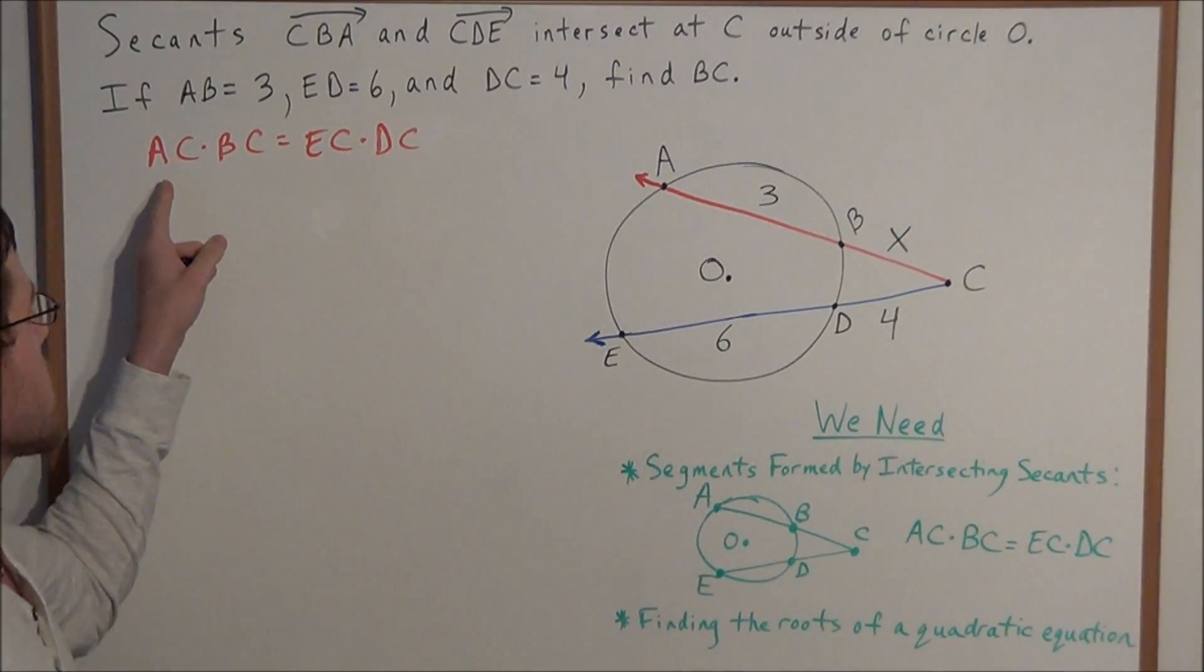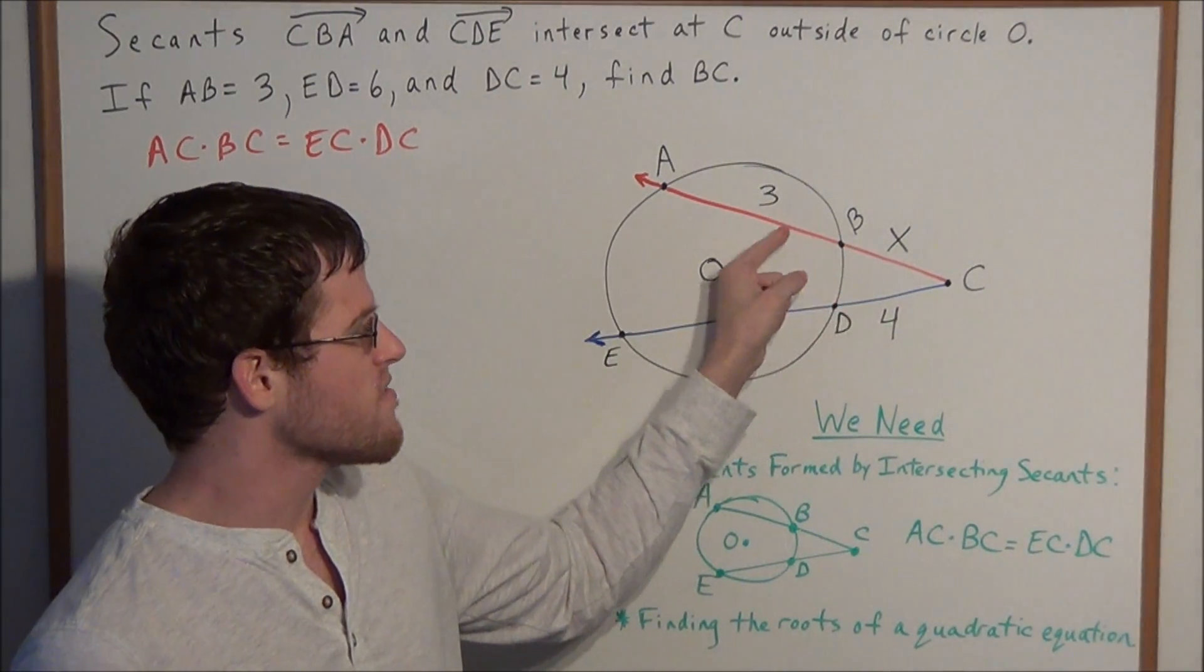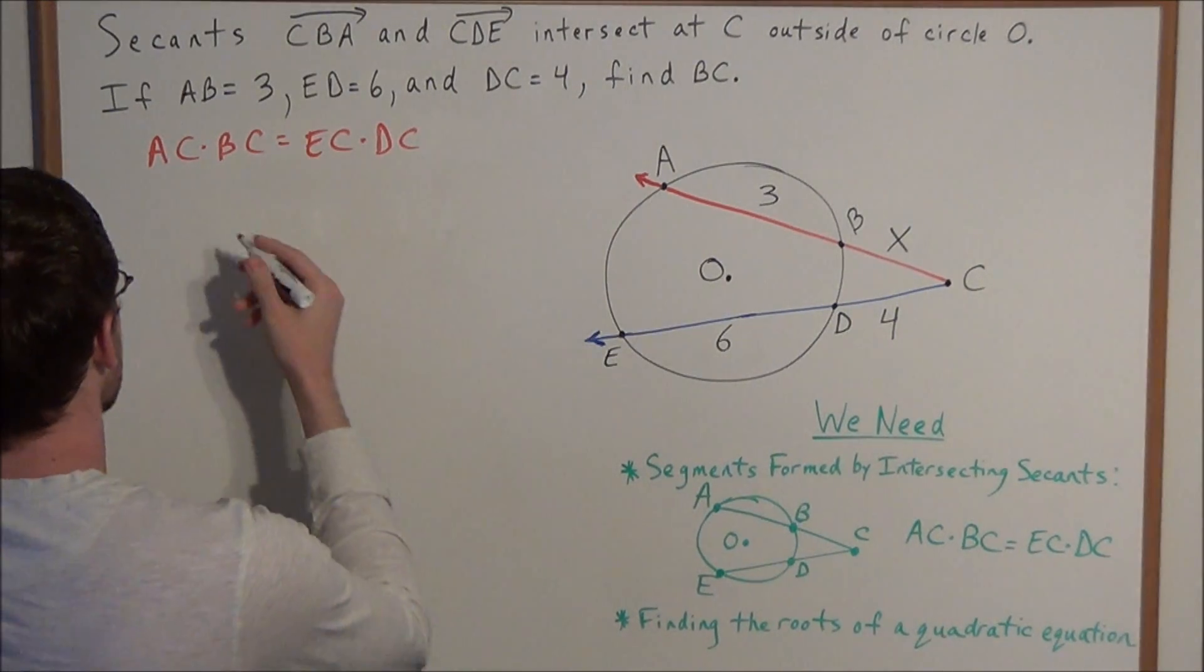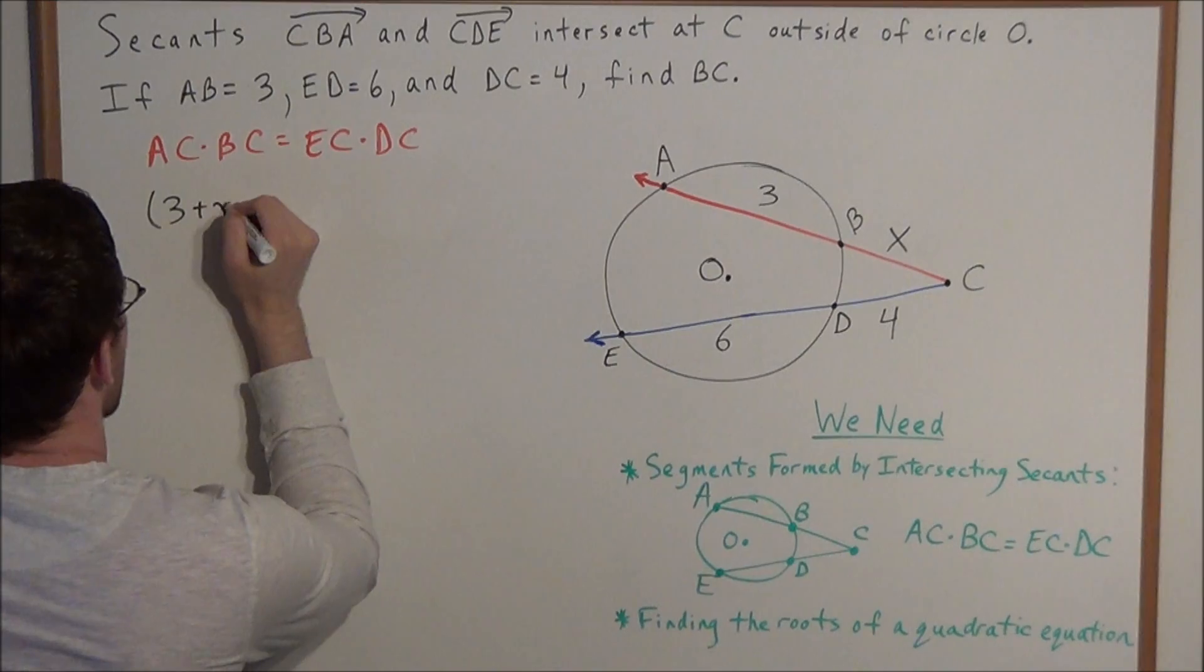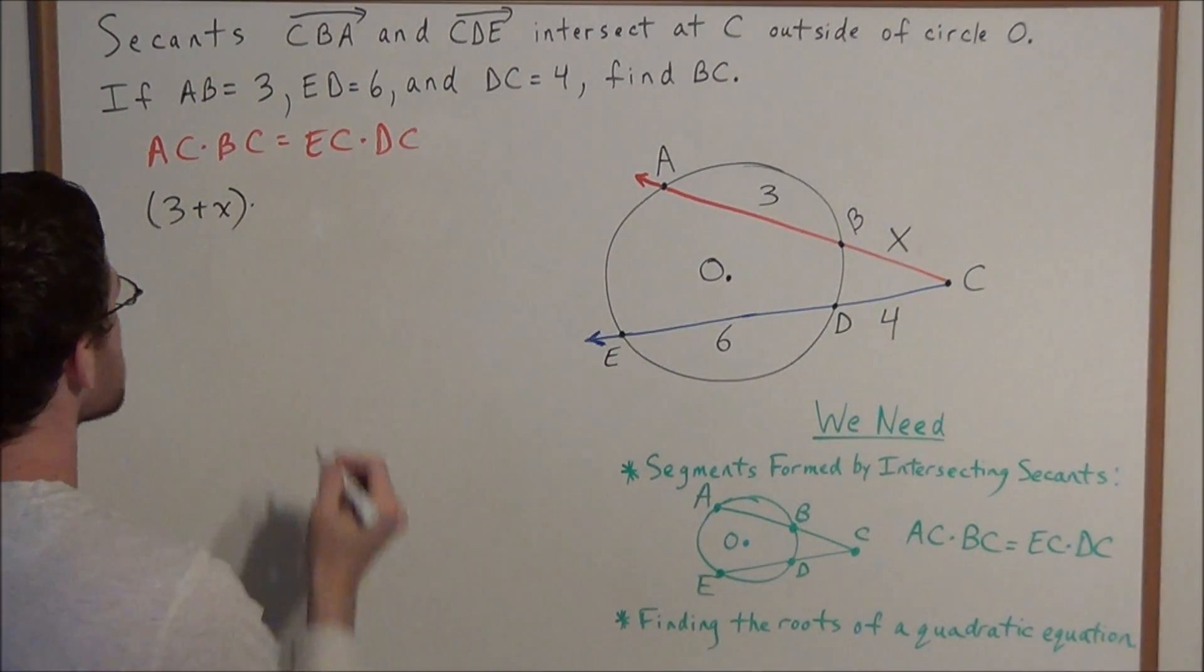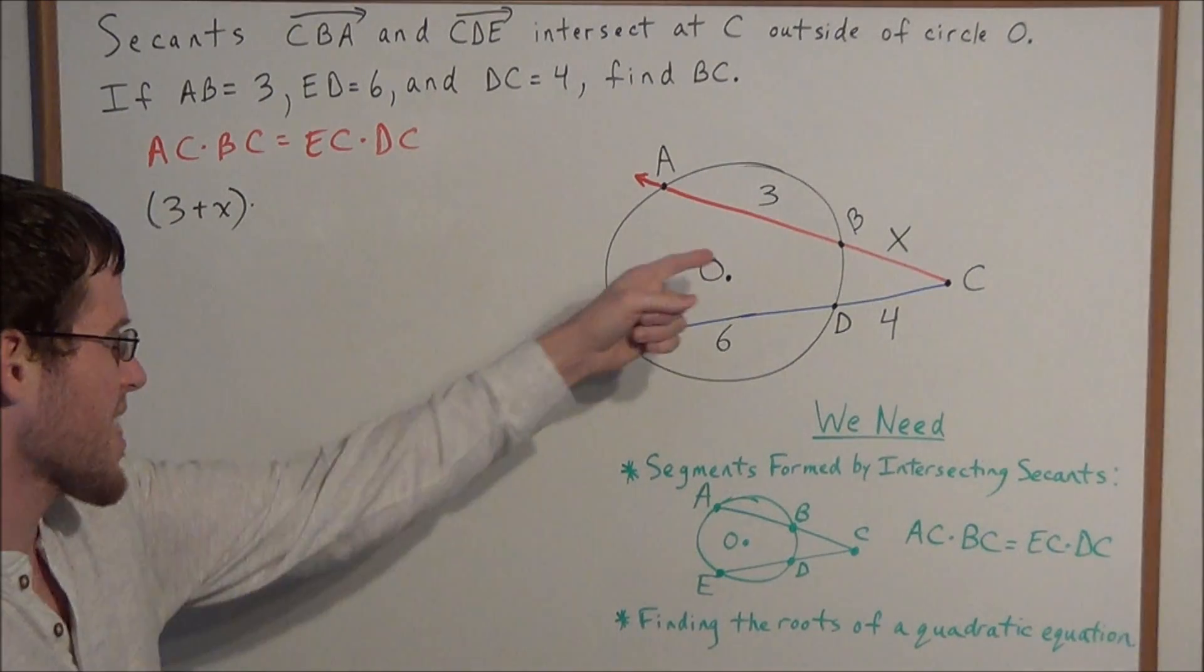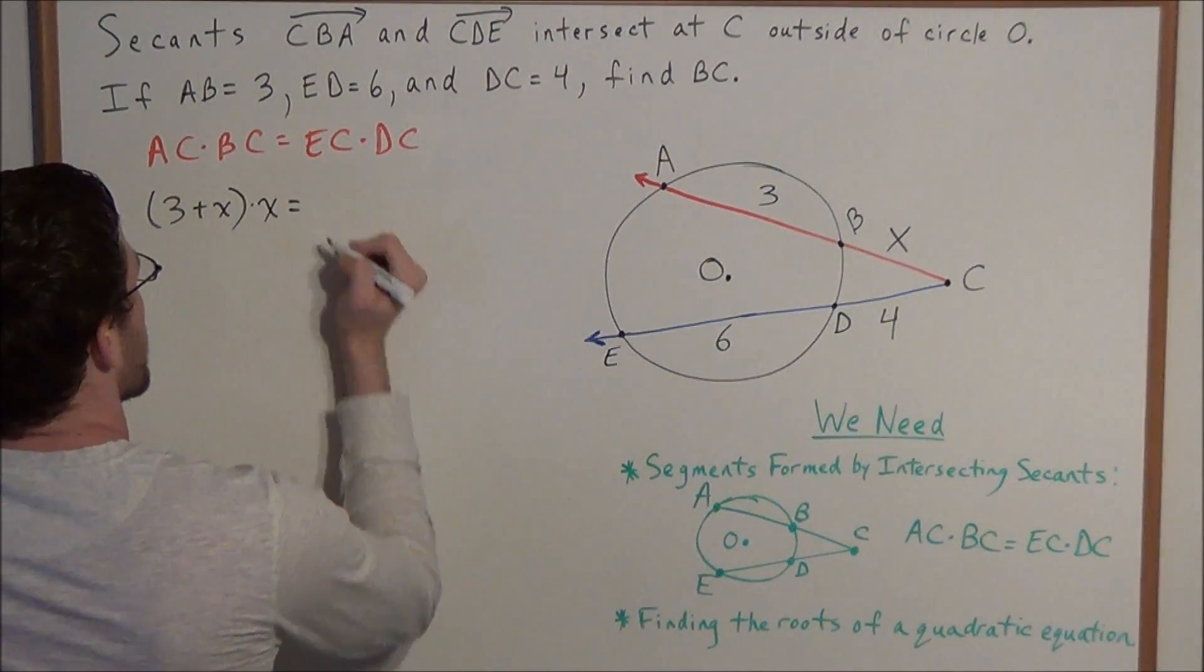For instance, we have the length of AC. Well, we know that the length of AB is 3 and the length of BC is X, so the length of the entire segment would be 3 plus X. So we have 3 plus X times BC. But what is the length of BC? We set that equal to X. So we have (3 + X) times X equals,